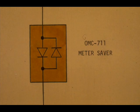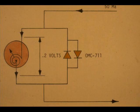The current would then flow through the OMC 7-Eleven device. The OMC 7-Eleven is called a meter saver. It is physically two back-to-back diodes. Two diodes are used to make the device goof-proof — you cannot hook it up backwards. When the meter is in parallel with the meter saver, there are only a few tenths of a volt across the diodes.